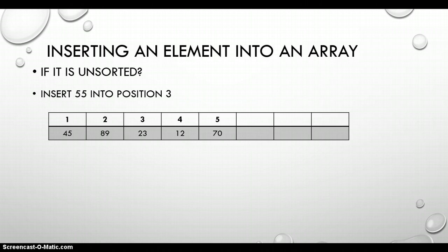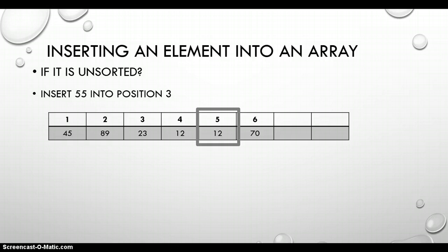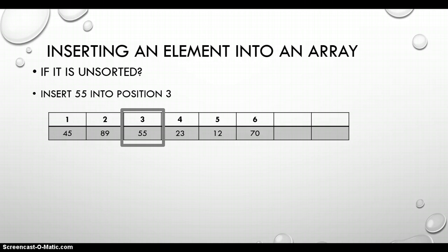Let's look at this array visually. It is unsorted and there are five elements, so our counter is five. We want to insert the number 55 into position three. We start moving from the back: we take the number 70 in position five and put it into position six, then take position four and put it into position five, then take position three and put it into position four. Now that we're at position three, we simply change its value to 55.